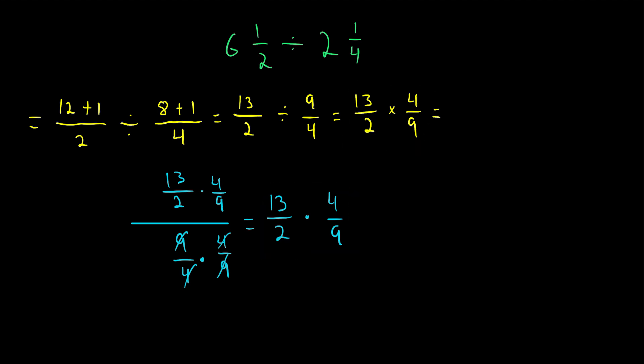Now let's finish the problem. Multiply across the numerators: 13 times 4 equals 52. Multiply across the denominators: 2 times 9 is 18. I noticed both the numerator and denominator are even, so we can multiply them both by 1/2 to simplify. 52 times 1/2 is 26, and 18 times 1/2 is 9. And this is 6 1/2 divided by 2 1/4 as an improper fraction.